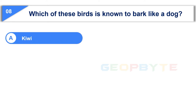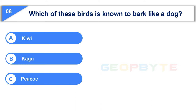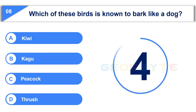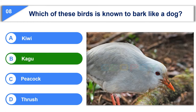Option A: Kiwi. Option B: Kagoo. Option C: Peacock. Option D: Thrush. Your time starts now. Your time is up and the correct answer is Option B: Kagoo.